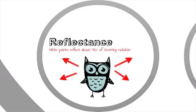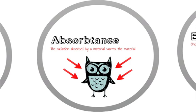New white paint will reflect 75% of the radiation that hits it. The second is called absorptance, and that's the amount of incoming radiation that is absorbed by a material and raises its temperature, like the sun shining on a stone. Grass absorbs 94% of the radiation that hits it.